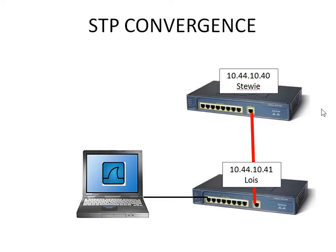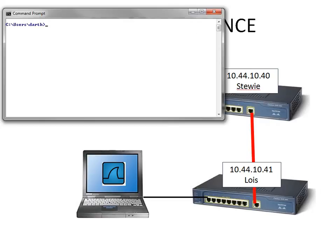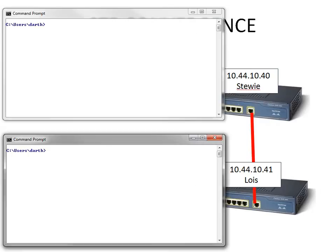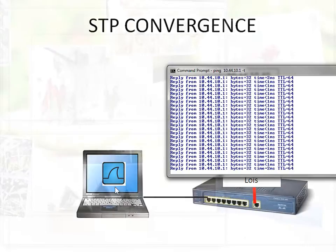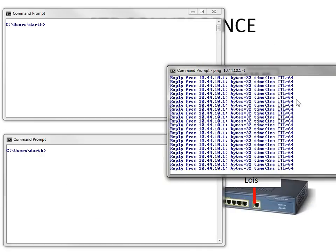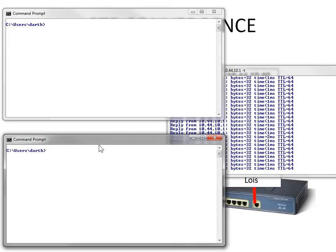We've got our Spanning Tree convergence exercise. We've got a switch and a switch, both of them have Spanning Tree, and I'm connected to the switch down here called Lois. So what we're going to do right now is a couple of things. Let me just bring up a couple of command prompts. We've got this guy here pinging away at my router just to show us if data is moving or not. And then we've got two command prompts to log into each switch.